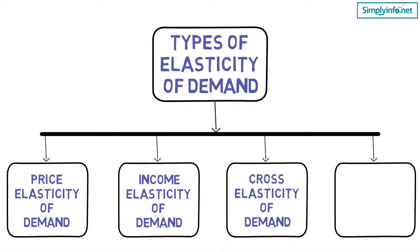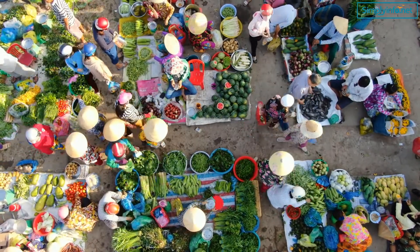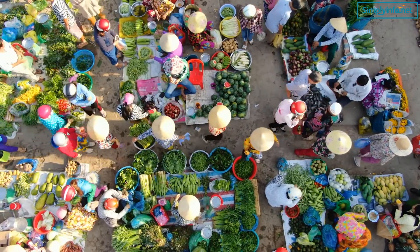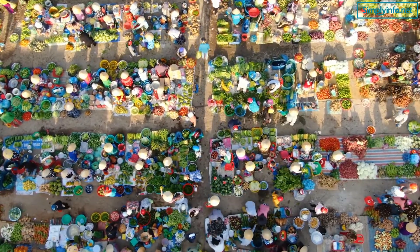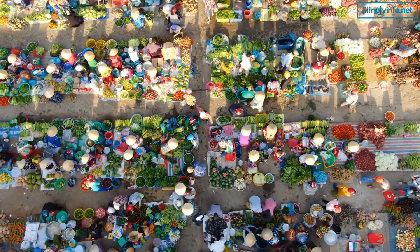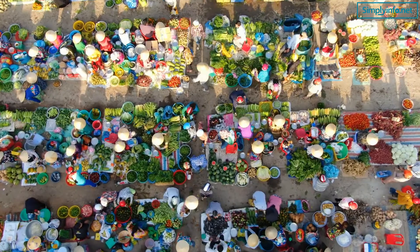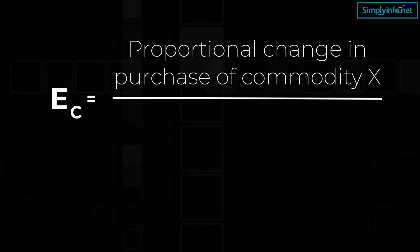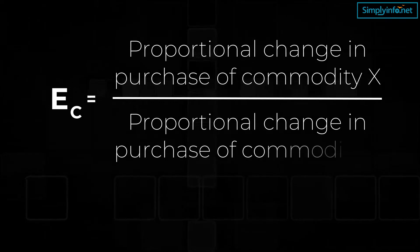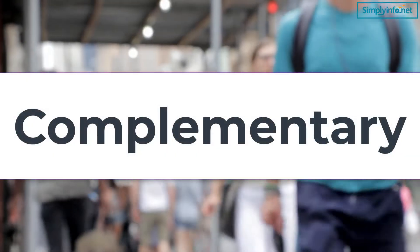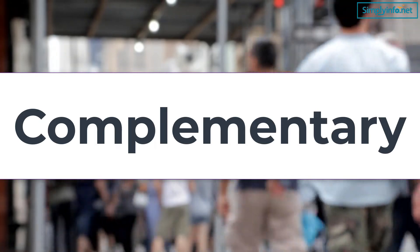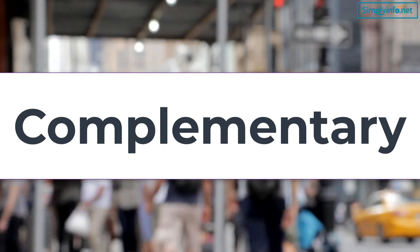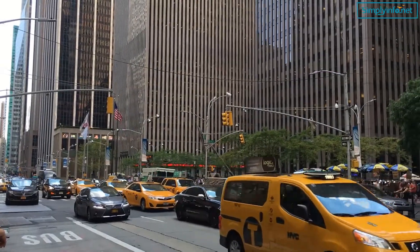Number 3: Cross elasticity of demand. The cross elasticity of demand refers to the change in the quantity demanded for one product as a result of the change in the price of another product. We see this type of elasticity generally in interrelated goods such as substitutes and complementary goods. The two commodities are called complementary when the price of one commodity falls, the demand for the other commodity increases, and vice versa. For example, car and petrol.